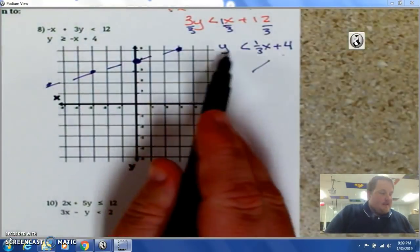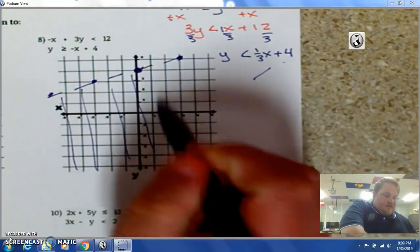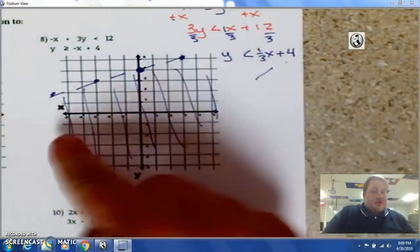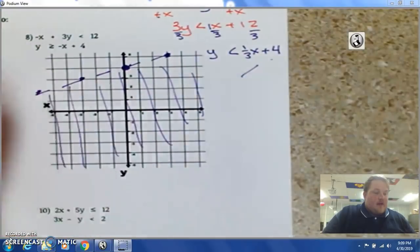And, it says y is less than that 4. So, y is less than. Go to 4 and shade down. Any of those points are a solution to this line. But, we need to find a solution to both lines.